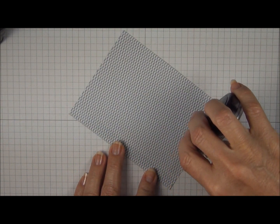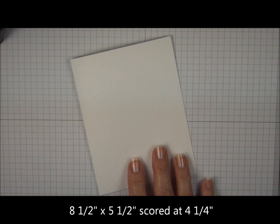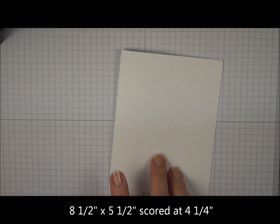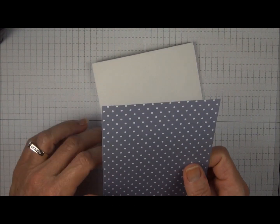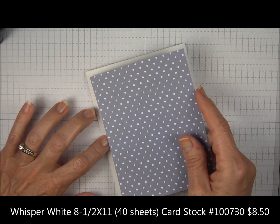Add adhesive around all the edges. The Whisper White Card Stock is eight and a half by five and a half and it's scored down the middle at four and a quarter and we're going to layer this directly on top.